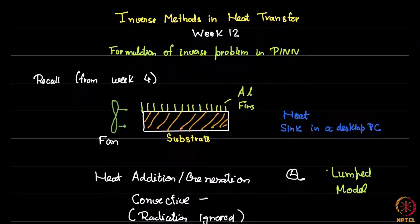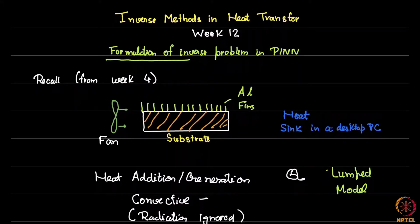Welcome back — we are in week 12 of inverse methods in heat transfer. In the previous few videos you saw first some utilizations of neural networks for classification, then neural networks applied to physics-informed neural networks (PINNs) as a forward problem. Now what I want to show you in this video is simply a formulation for an inverse problem in PINNs. I'm not going to show you the full solution, just the formulation, using one specific network to get some intuition for what happens.